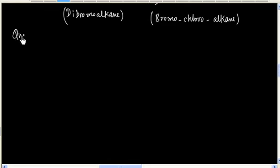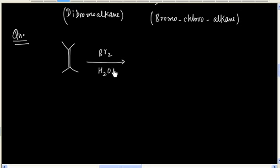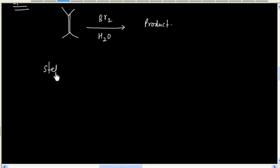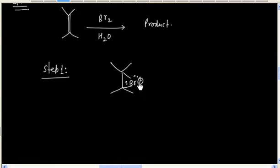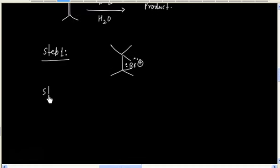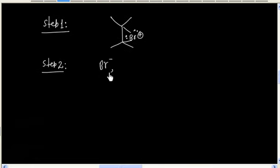Now let us try this problem. What will be the product in this reaction? This time we have Br₂ in water. Once again, step 1 is the same — formation of cyclic bromonium ion as intermediate. In the next step, we have two nucleophiles present: Br⁻ and H₂O.